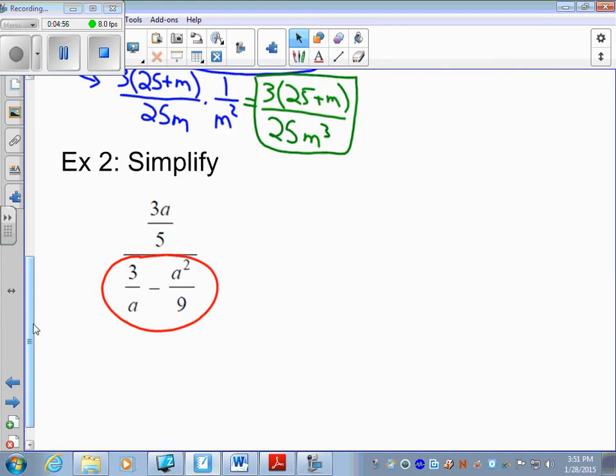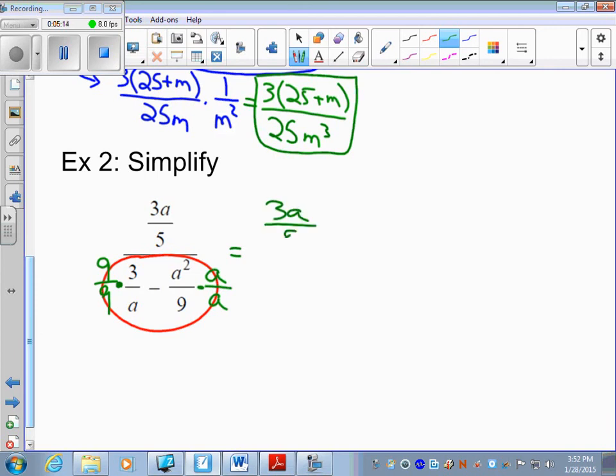So combined fractions with subtraction, you have to have like denominators. I'm going to take the second denominator's fraction multiplied by the first fraction. The first fraction's denominator multiplied by the second fraction. And I'm going to rewrite everything. 3a over 5, big division, 9 times 3 is 27 over 9a.